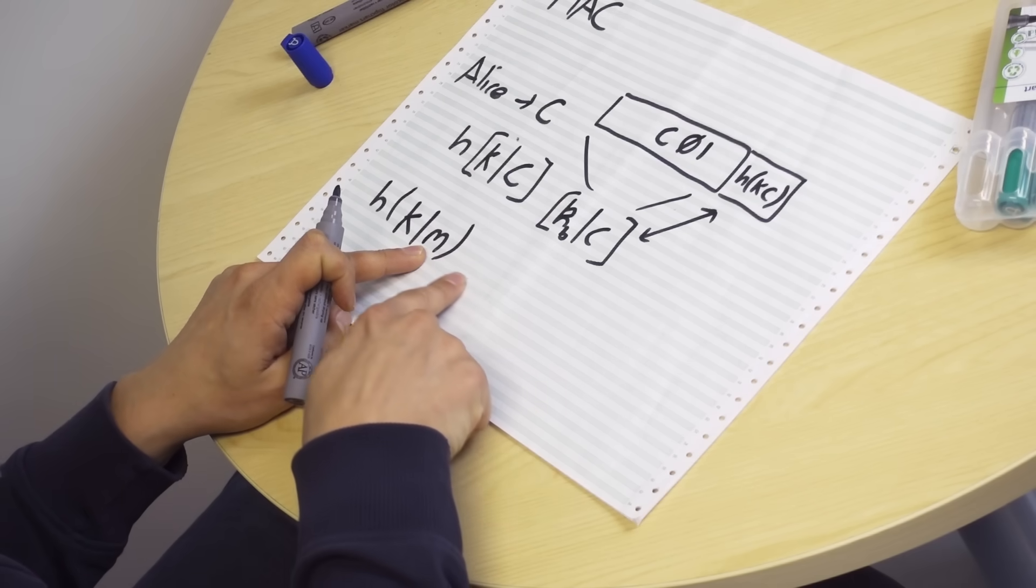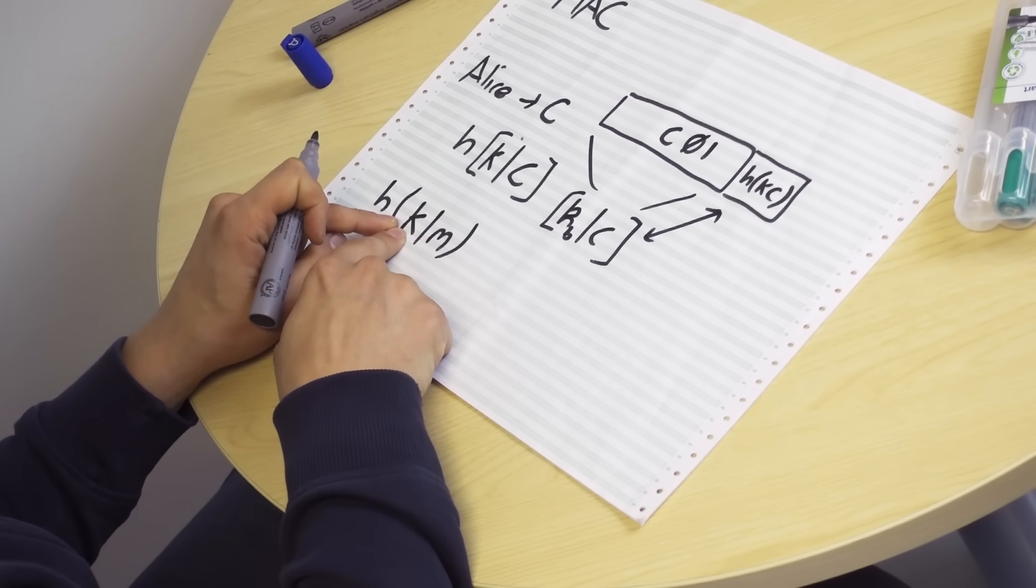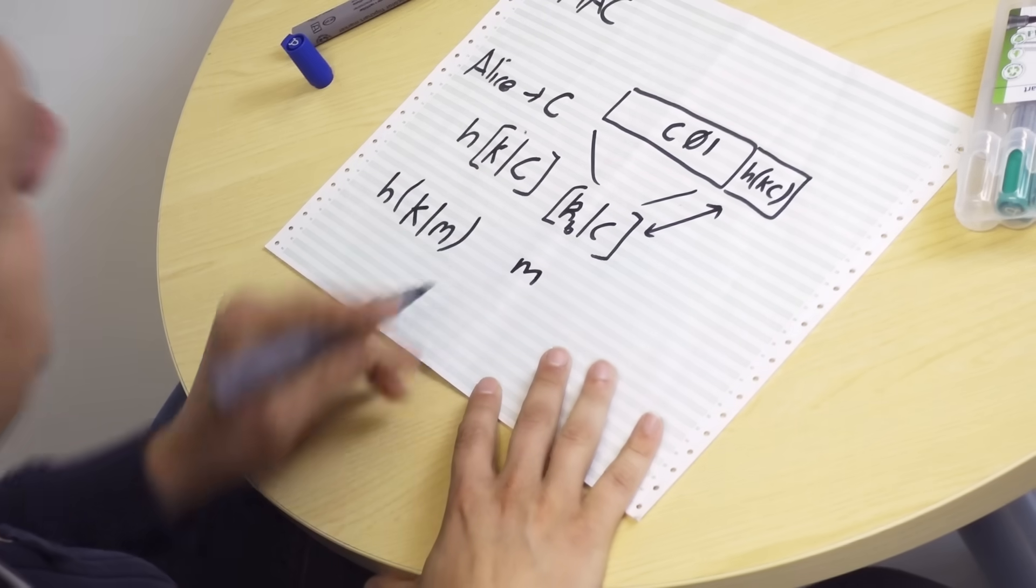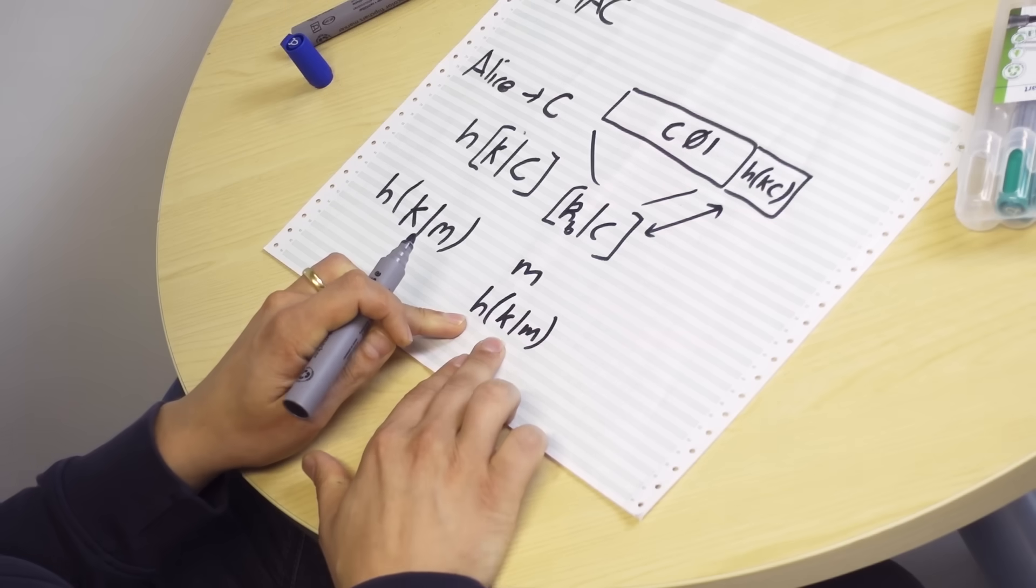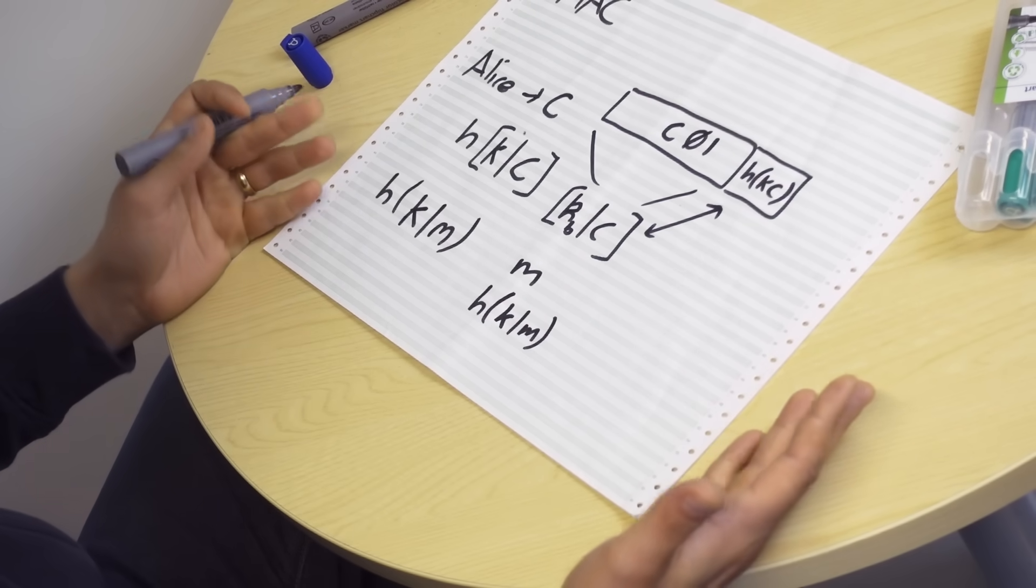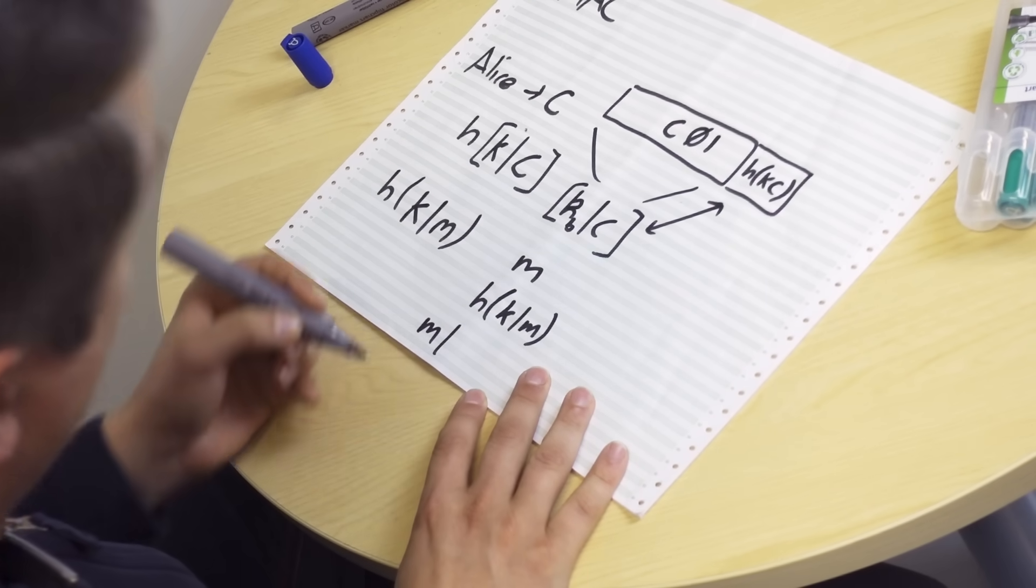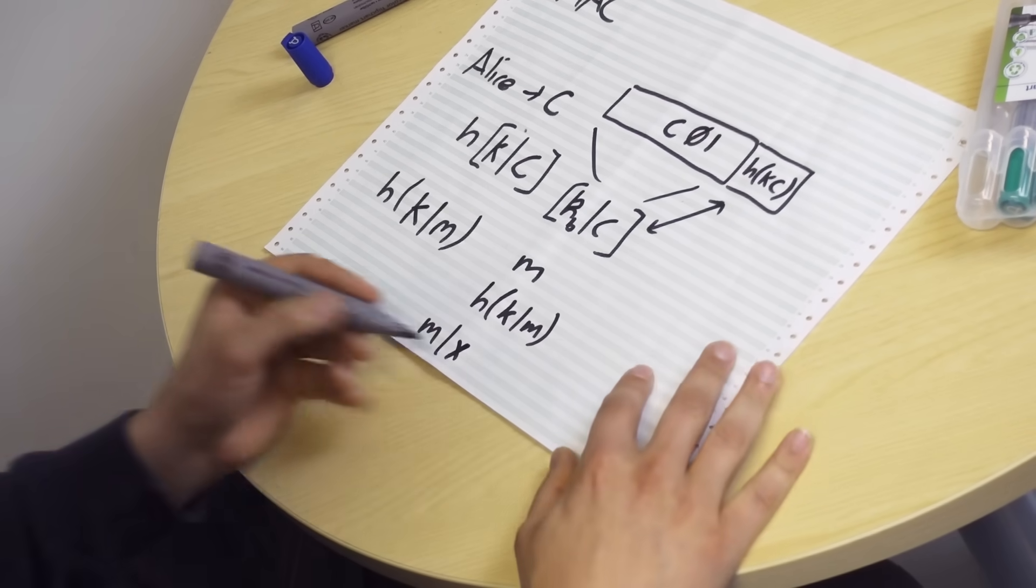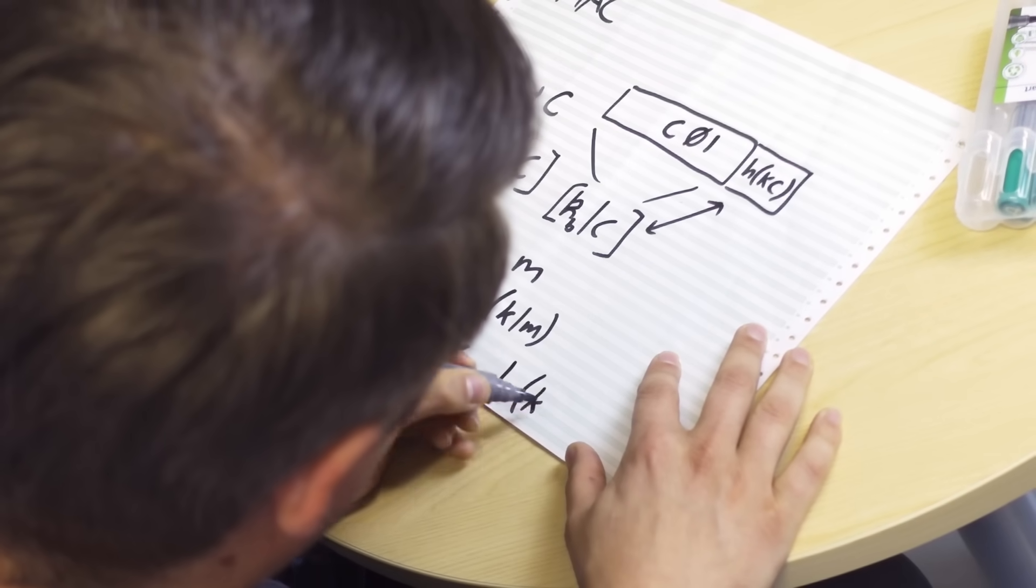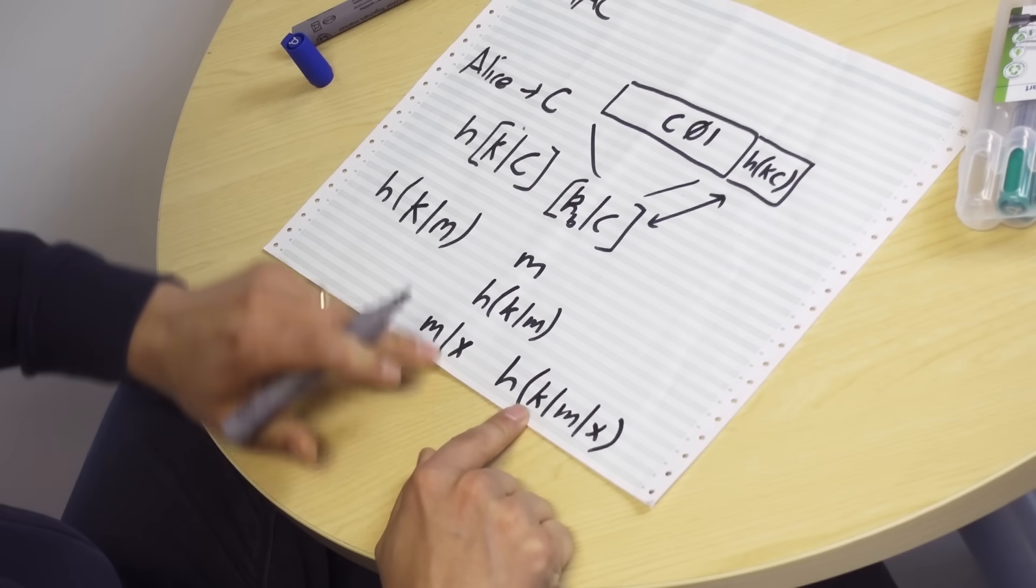What we can do with a length extension attack is make this message longer and be able to calculate the correct hash for it without knowing what the key is. As an attacker, we receive the message. We receive the hash of the key and the message, which we cannot reverse because the hash looks random. And we can calculate a message with extra data. Let's just call it X. And we can also calculate the hash of the key and the message and X. And that is a big problem.